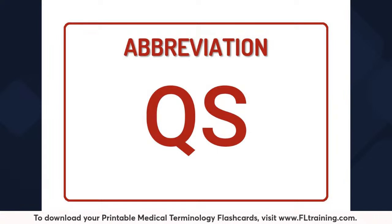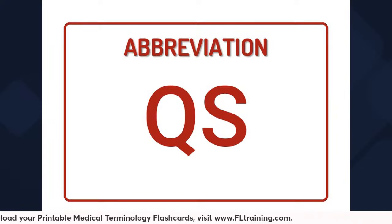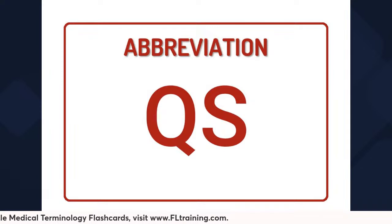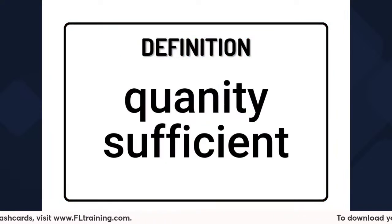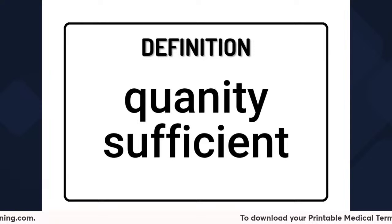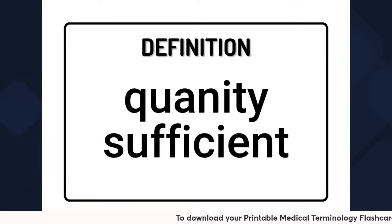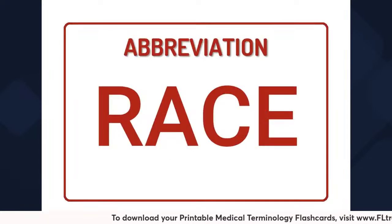Continuing from our previous video: QS equals quantity sufficient, such as when you're collecting blood. We want to make sure that you have a sufficient quantity inside of the tubes.